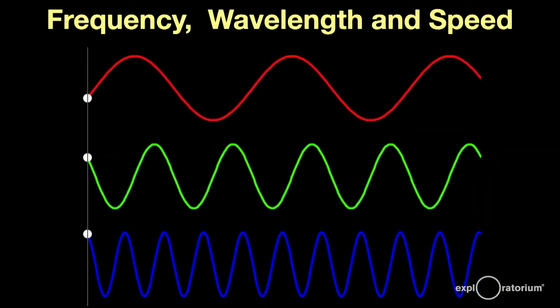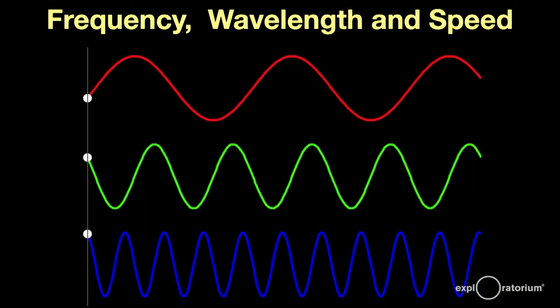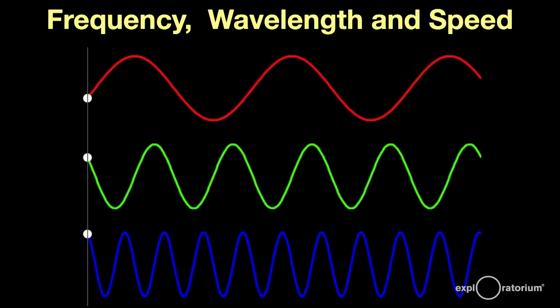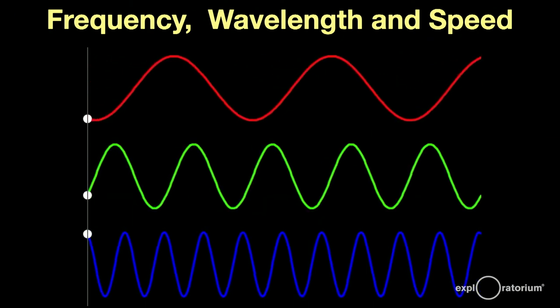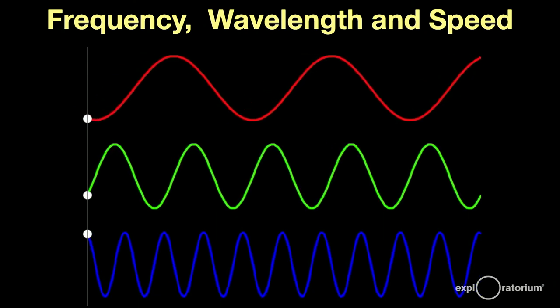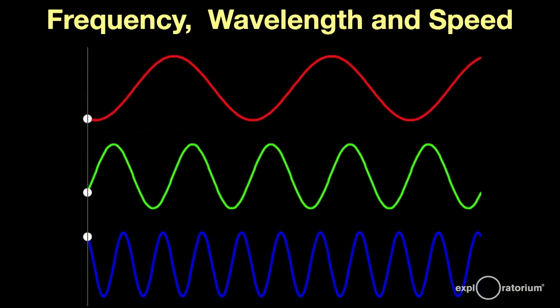All light waves travel at the same speed, the speed of light. That means that slower vibrating light, red, produces long wavelength waves, and faster vibrating light, blue and violet, produces shorter wavelength waves. There is a simple, direct, and proportional relationship between the frequency and the wavelength.